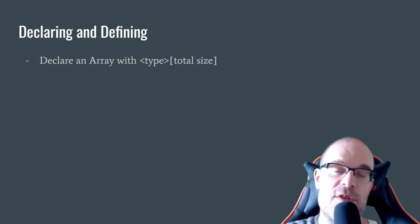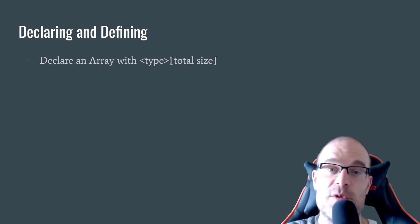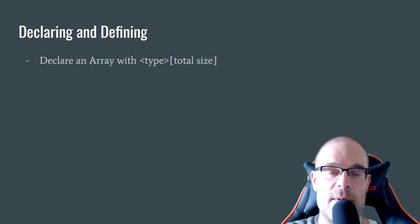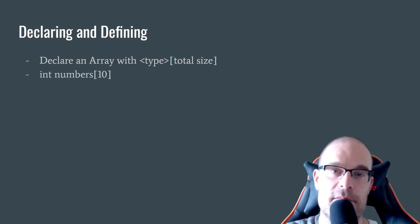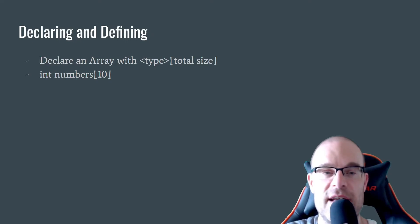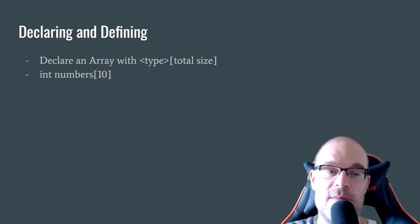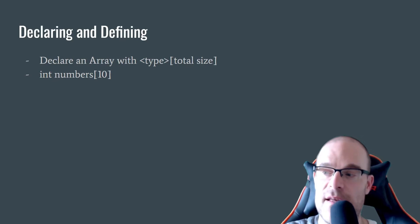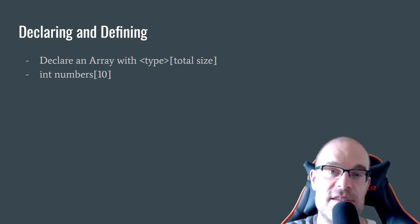First, we declare an array with the data type we're working with, a name, and then the total size — how many total elements there are in that array. We have to specify that up front. For example, let's say we want to keep track of ten numbers. We declare int as our data type, numbers as the name of the array, and ten is the total size of elements we are storing in that collection.